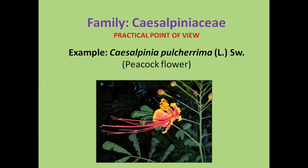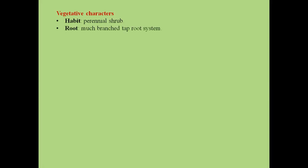Now we will discuss this family from a practical point of view. Generally, in all laboratories, the example taken for this family is Caesalpinia pulcherrima. In Marathi, we call it shankasur. During the practical, we provide a twig of this shrub to students and ask them to write down the characters of this plant — vegetative as well as reproductive. This is a perennial shrub with a much-branched taproot system.